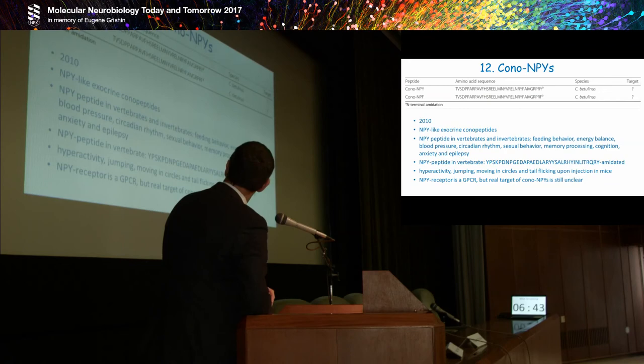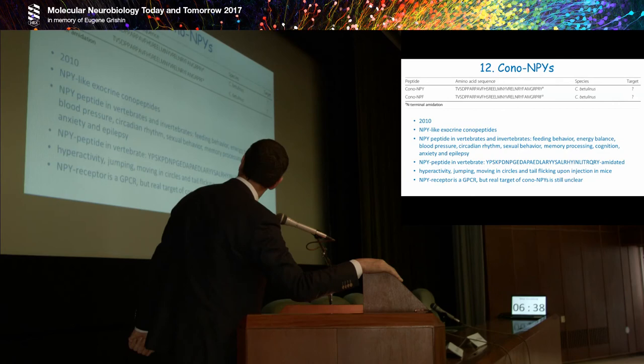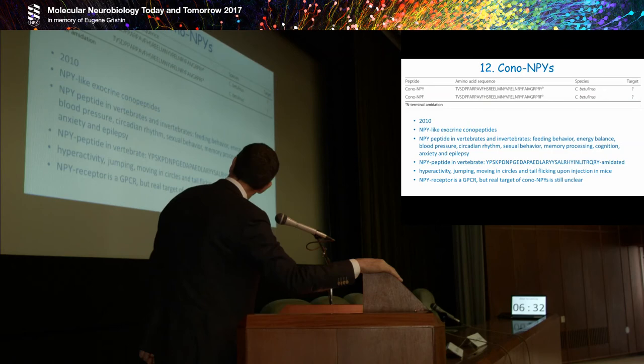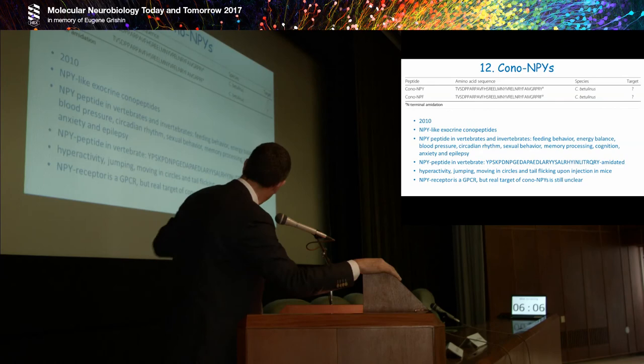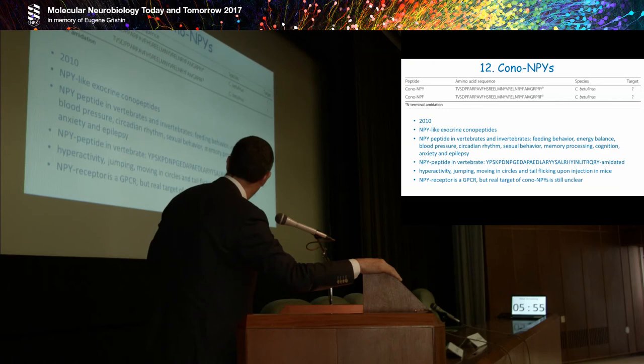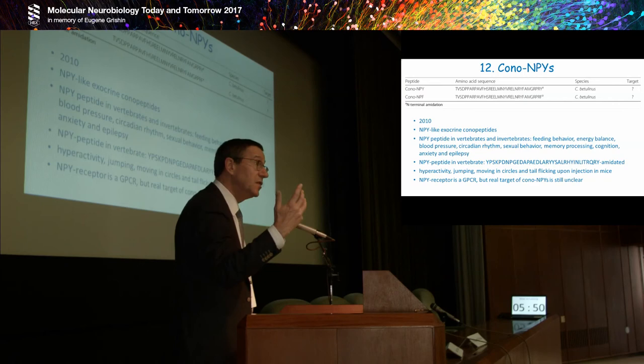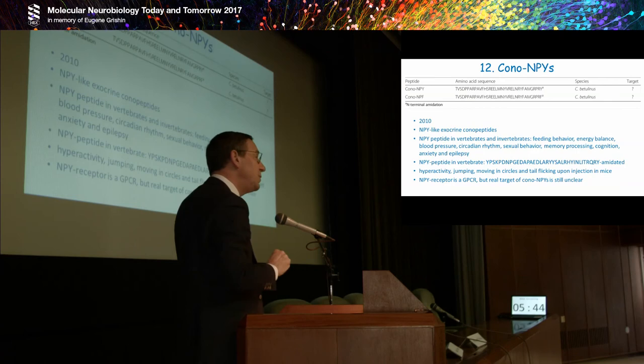And then the previous last one, the Cono-NPYs. We know these, we have two representatives among the conopeptides—Cono-NPY, NPF—C-terminally amidated. We know them since 2010. They have a link with the NPY-like endocrine conopeptides or peptides in invertebrates, as well as in vertebrates. What do we know in terms of function? We know that they have a role in feeding behavior, energy balance, blood pressure, circadian rhythm, sexual behavior, memory processing, cognition, anxiety, epilepsy. There is a representative of the NPY peptide in vertebrates. Always amidated C-terminally, but not many other PTMs to be seen. They cause hyperactivity, jumping and moving in circles of mice, tail flicking. But unfortunately, we know that the NPY receptor is a classical GPCR, but whether these molecules, peptides, are the true ligands for this GPCR is really unclear. So a lot again is to be done.